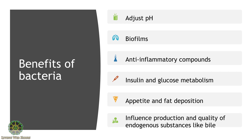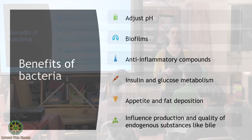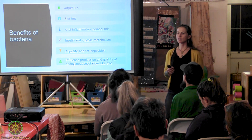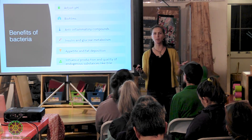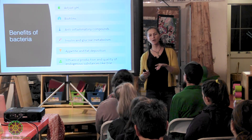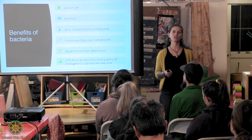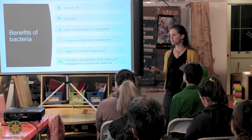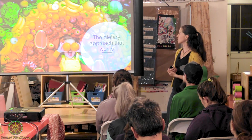Bacteria produce anti-inflammatory compounds, including those short-chain fatty acids produced in your colon that are an essential nutrient. They control insulin and glucose metabolism, appetite, and fat deposition. They also influence the production and quality of endogenous substances like bile. If you have the right bacteria, the quality of your bile is going to be much better.